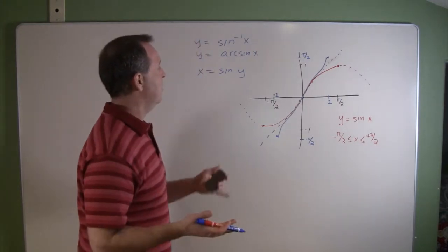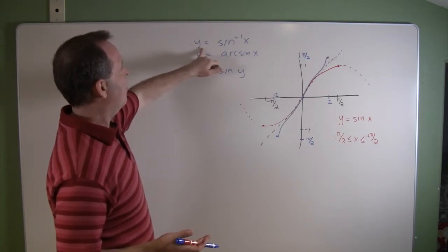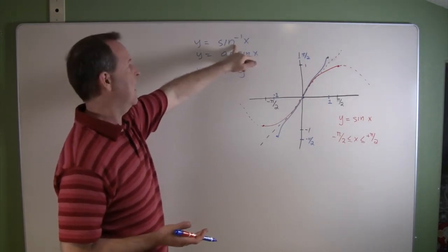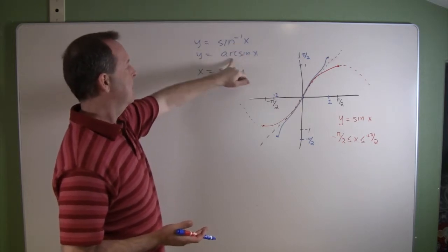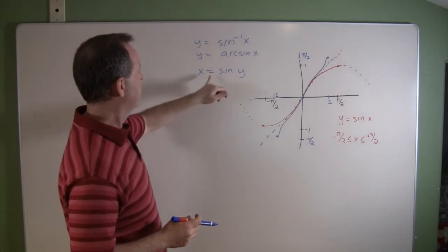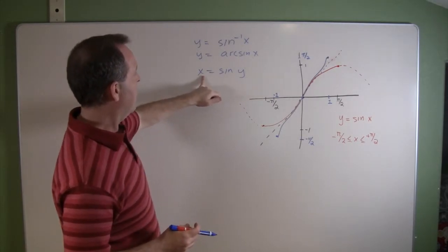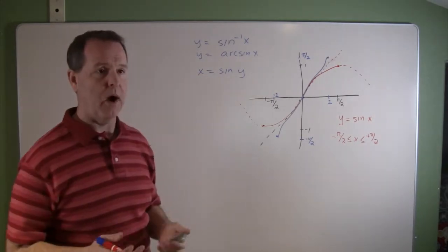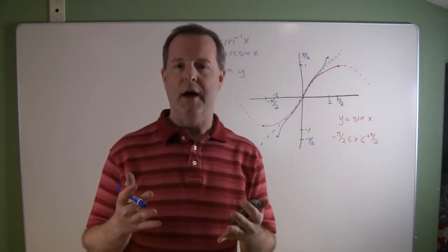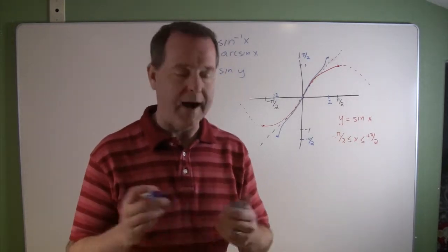And our terminology that we'll use is that we'll say that y is the inverse sine of x. Some people still might use the word arc sine and so forth. And it reflects where now we have x equals the sine of y. And what we're looking for is basically what's the angle of a certain particular y value that we have.